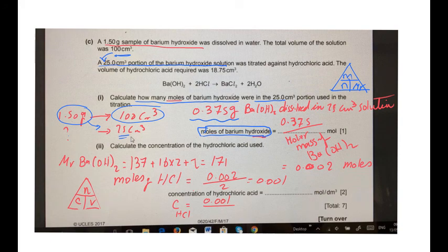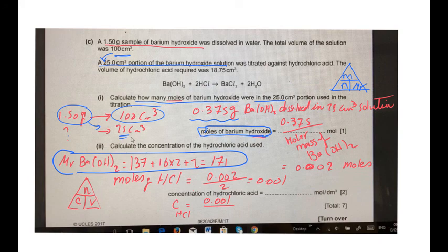The molar mass of barium hydroxide, you calculate it from this equation, it's 171. So, you divide 0.375 over 171. You get 0.002 moles of barium hydroxide.